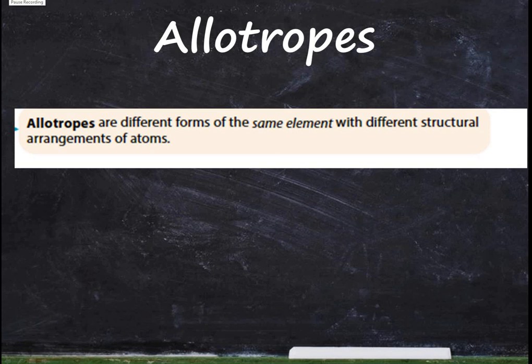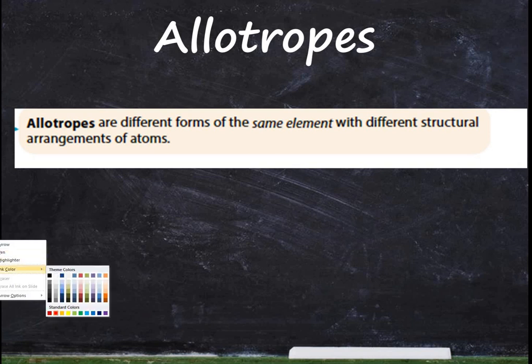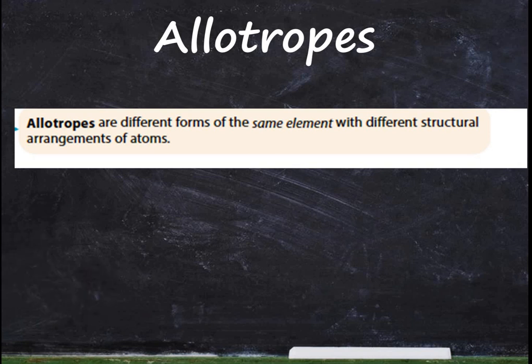One of the most important topics asked in chemistry is: what are allotropes? Allotropes are basically different forms of the same element with different structural arrangements of atoms. Remember, 'allot' means different.